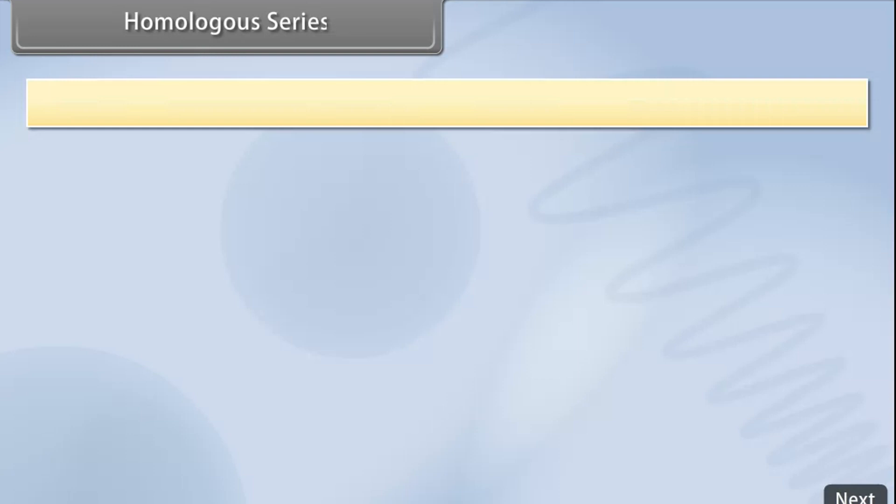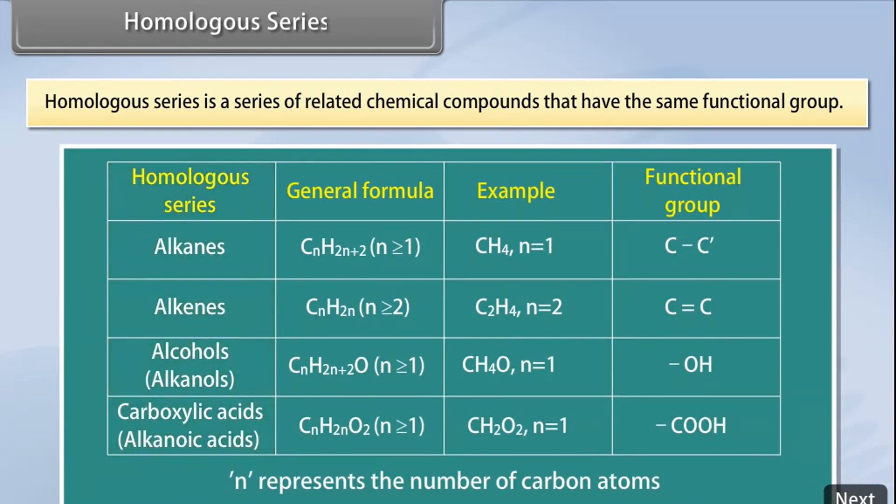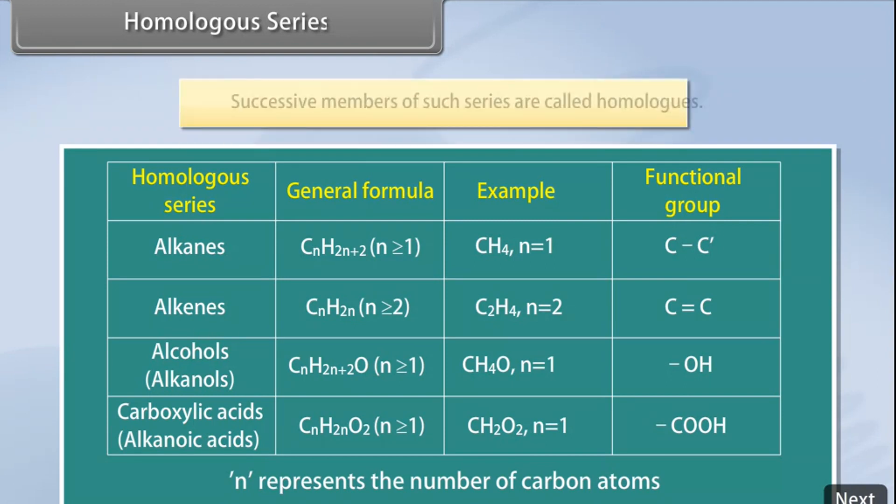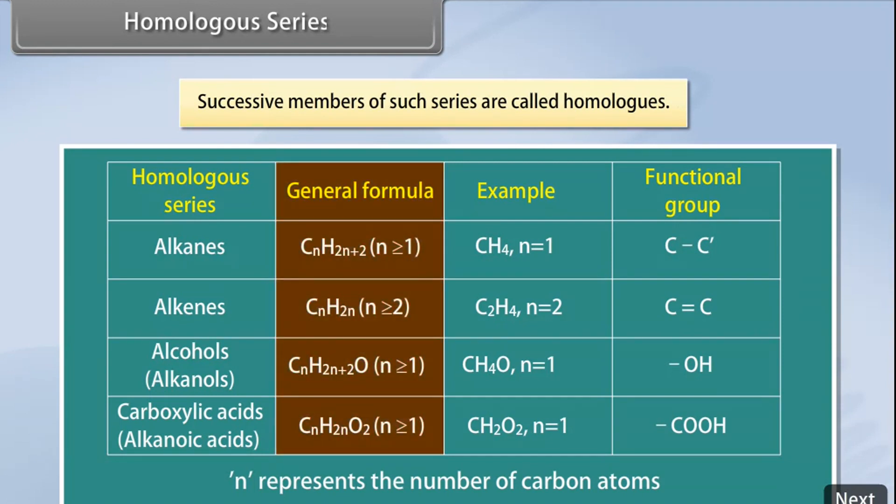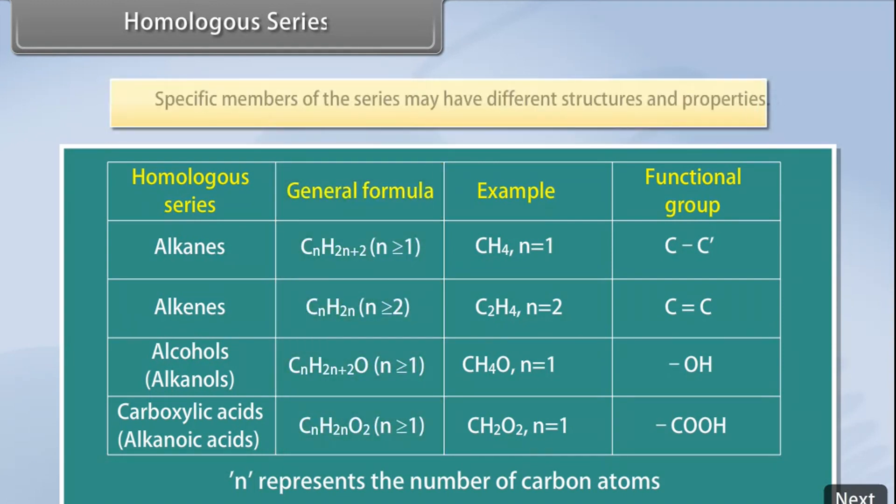Homologous series: A homologous series is a series of related chemical compounds that have the same functional group. These differ in formula by a fixed group of atoms. The successive members of such series are called homologous. Even though the general formula remains constant in a homologous series, specific members of the series may have different structures and properties. However, the reactivity usually remains the same. In any homologous series, a gradation in the physical properties is observed. This gradation occurs due to the increase in the melting points and boiling points along with increasing molecular mass of the compound.